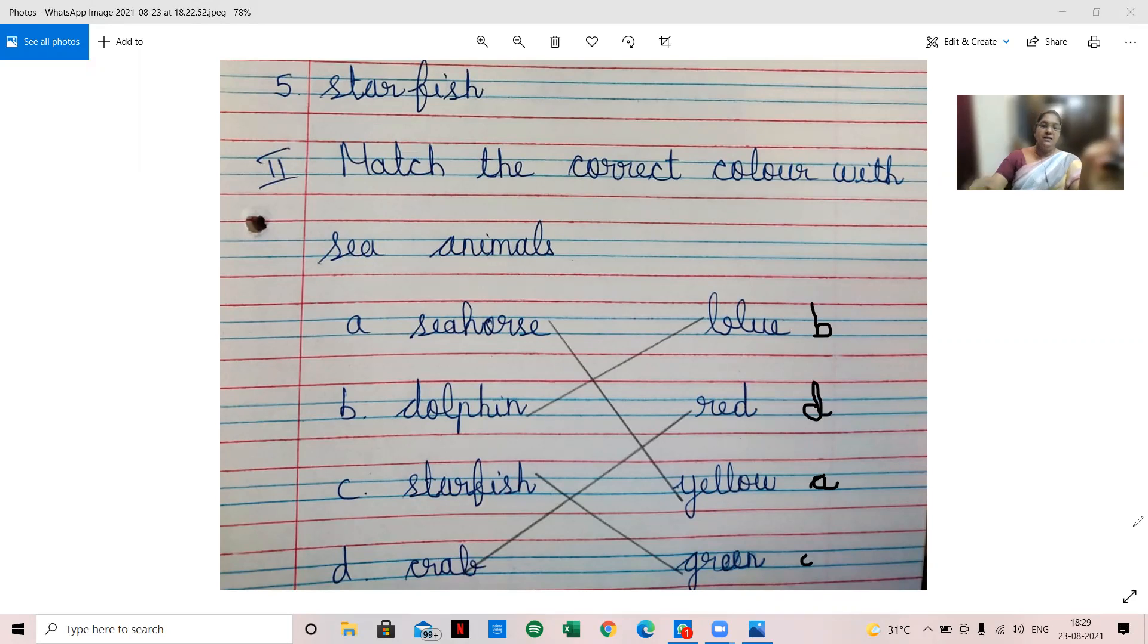As we have transitioned from UKG to first standard, first I matched it by drawing the line, then I have written the alphabets accordingly. If it is a number, you have to write numbers accordingly. This is the methodology you should know. Understand? Very good children.